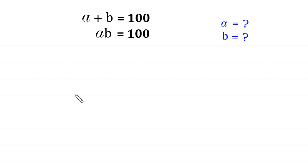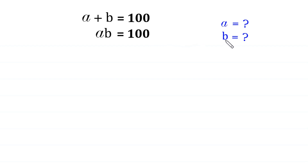Hello, welcome to how to solve this very nice system of algebra equations. A plus B is equal to 100, AB is equal to 100, and we need to find all possible values of A and B.